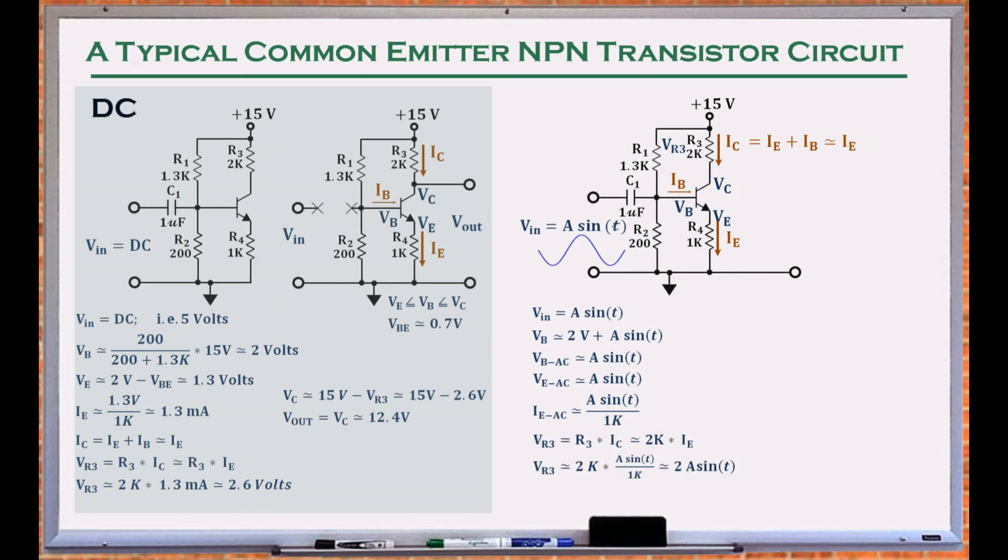This current must flow through R3, resulting in an AC voltage at the collector equal to 15 volts minus 2 times VIN. The negative sign is due to the fact that as the collector current increases, the collector voltage decreases. The DC component of the output can be blocked by adding a capacitor in series with the collector's signal. The circuit effectively amplifies AC voltages by a factor of negative 2.